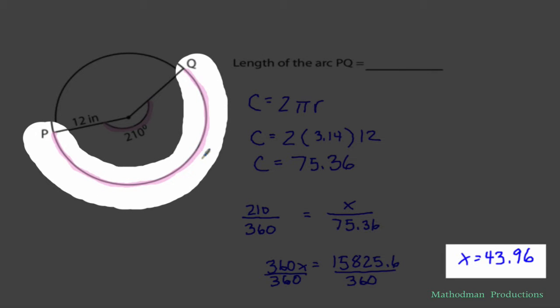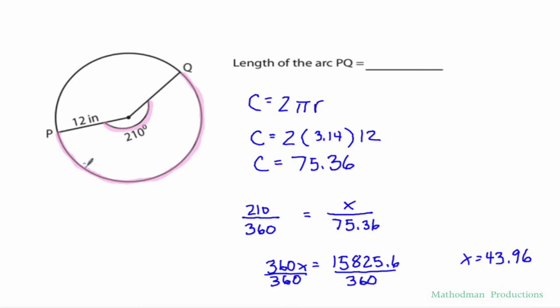Let's see if that answer makes sense. Well, the whole circle is 75.36 distance around. So it makes sense that a part of it, the arc length PQ, is less than 75.36, which is 43.96.